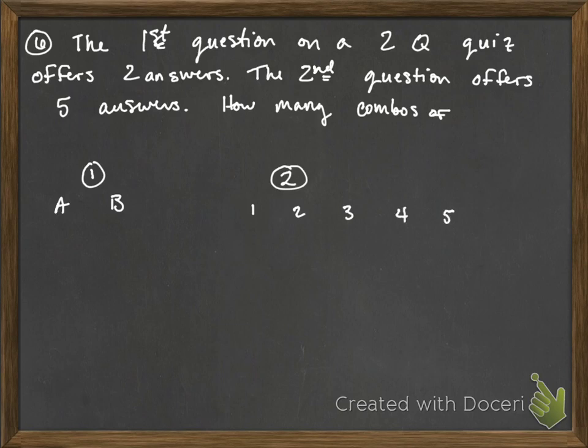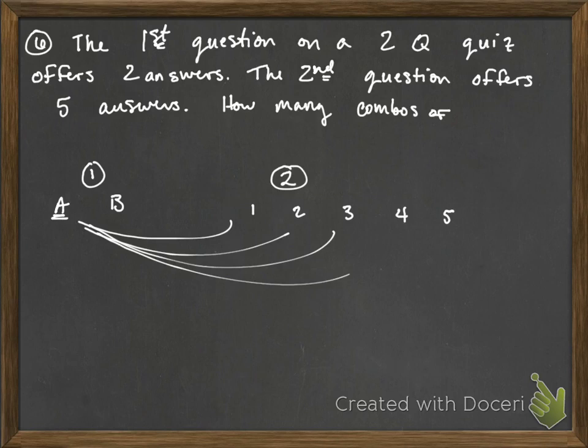Okay, so what we're going to look at is how many different combinations of answers can we have? Well, you can have A with one, two, three, four, and five. That would be five total answer choices that we could have if we picked A first.